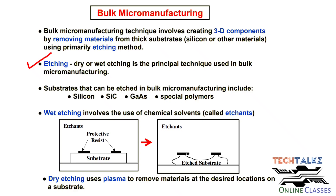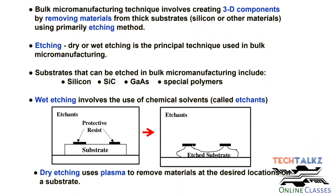In Wet Etching, we use certain chemical solvents to remove the material. In Dry Etching, plasma — that is, ionized gas — is used to remove the material.